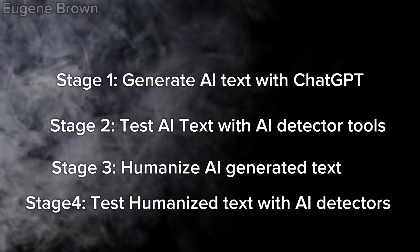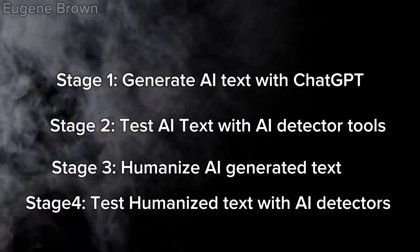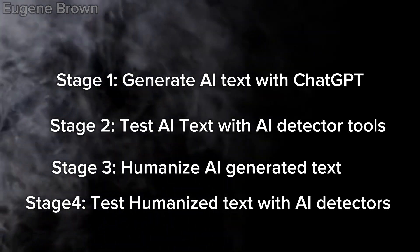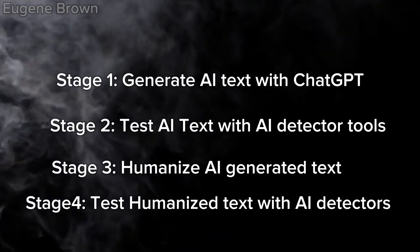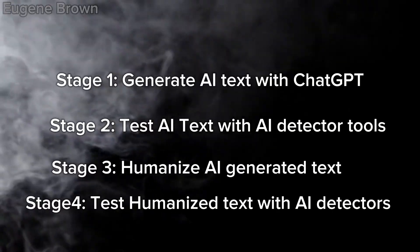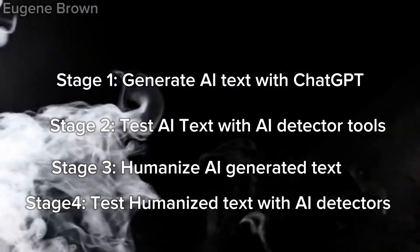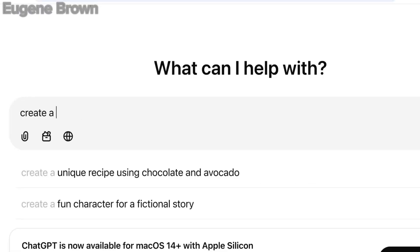Once again, I will check the humanized text from both tools on the AI detectors to see which of them performs better. You definitely want to watch this video right to the end to see the results. So let's head over to ChatGPT and type in: create a short article on the power of AI.